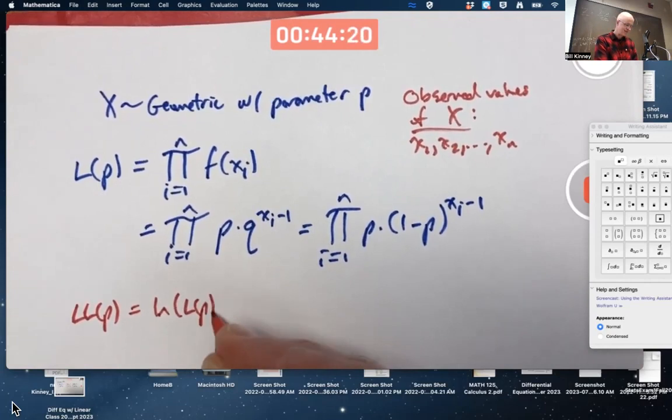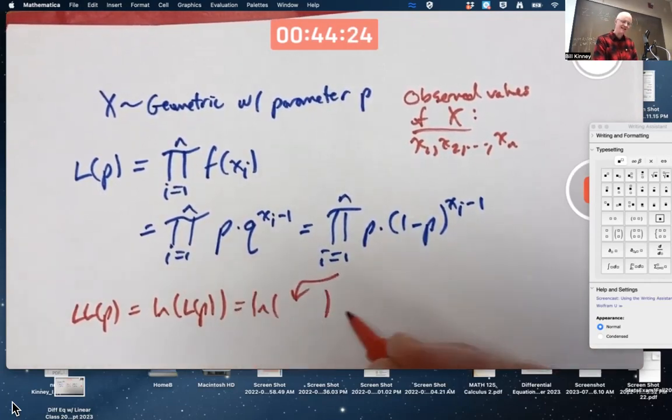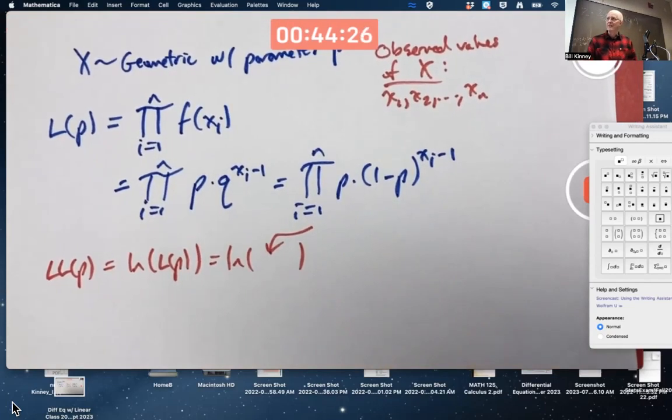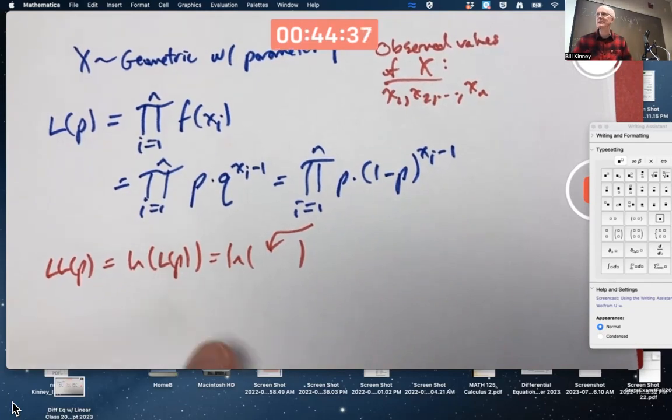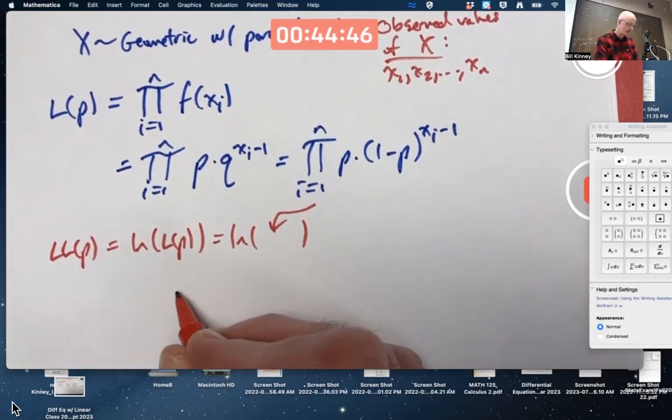LN of LL of P, LN of all that. And then we know, this you could say, maybe this is the real reason back in 10th grade, 11th grade, that you learn the log of a product is the sum of the logs. The real reason for it is this right here, doing maximum likelihood estimation. It's very nice that we can do this. We can say the log of a product is the sum of the logs.